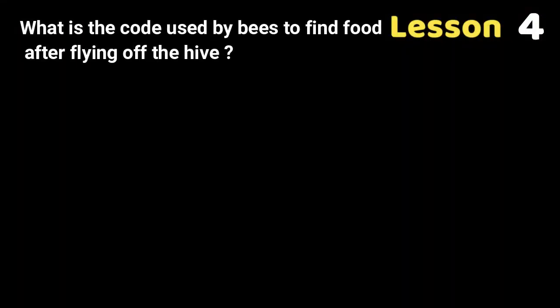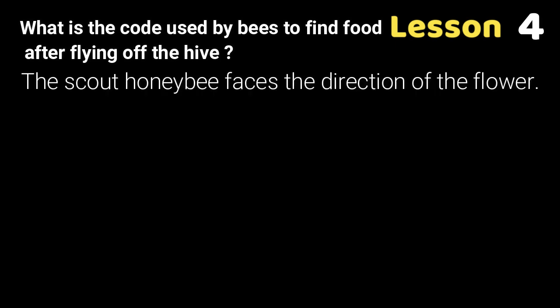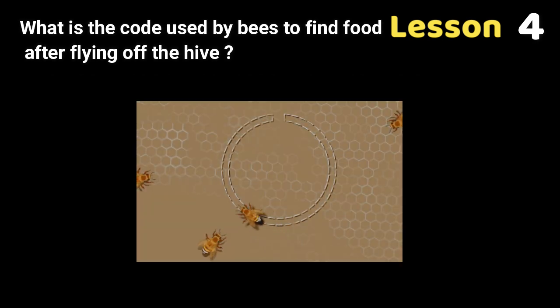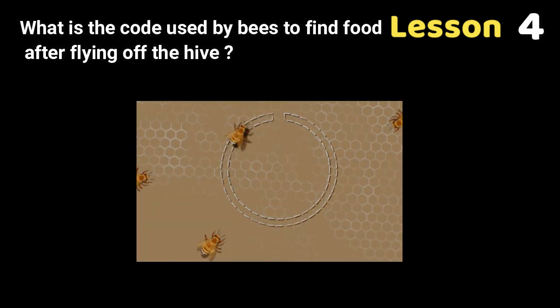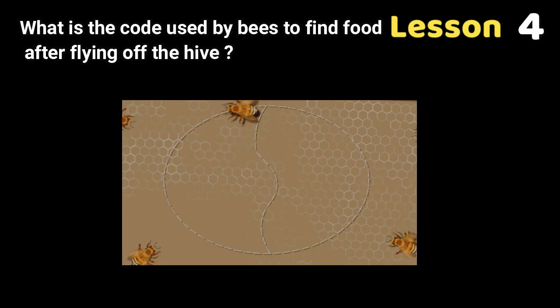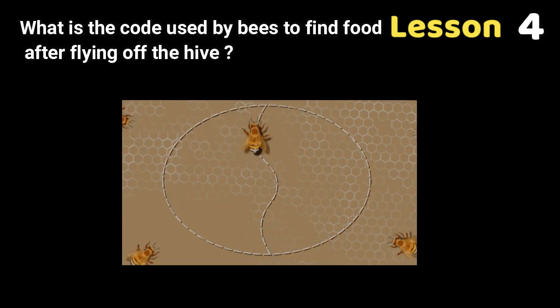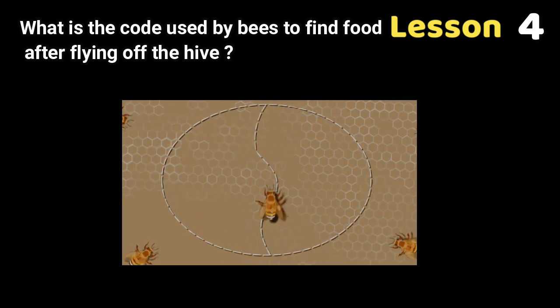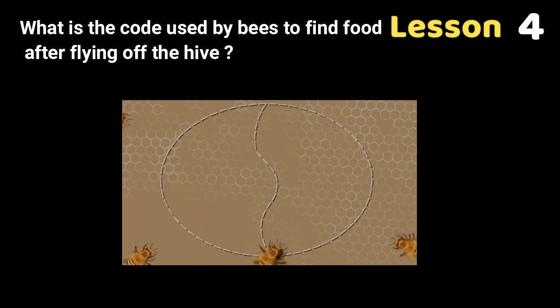What is the code used by bees to find food after flying off the hive? The scout honeybee faces the direction of the flower. The bee does one round dance if the flower is very close. The bee does a waggle dance to the right and then to the left if the flower is a little farther away, and this is considered as one dance.